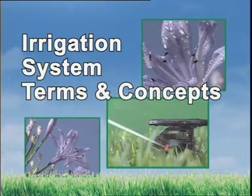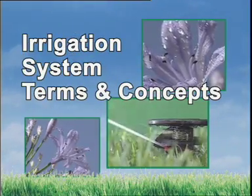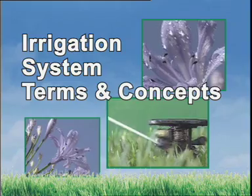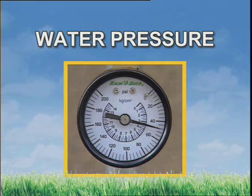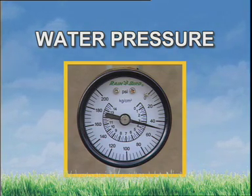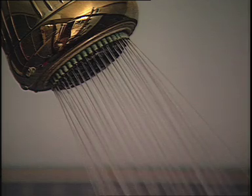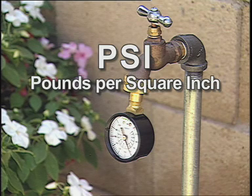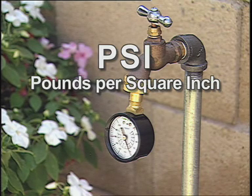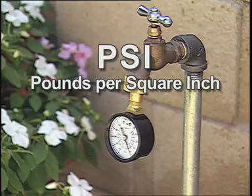There are several terms and concepts that are essential when planning an effective irrigation system. The first is water pressure. It's measured in pounds per square inch, or PSI. It's the amount of force that the water on your property will exert. Knowing your property's available water pressure will be a factor when calculating how many sprinkler heads can be operating at the same time and still be effective.